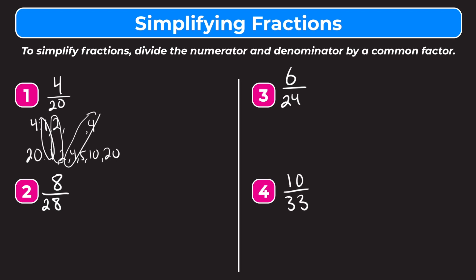So the greatest common factor is 4. Now we divide both the numerator and the denominator by that greatest common factor. 4 divided by 4 is 1, and 20 divided by 4 is 5. To know if you're done reducing, remember: if the only common factor between your numerator and denominator is 1, you're reduced as far as you can go. The only factor between 1 and 5 is 1, so 1 fifth is our simplest form.